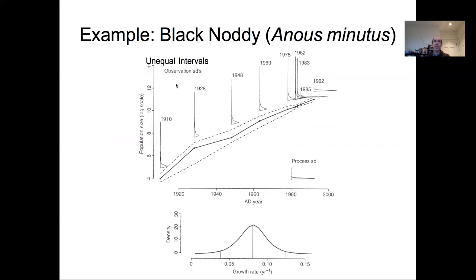Here's an example from the textbook looking at the population dynamics of a bird, the black noddy, where we're trying to estimate the process error and assigning unique observation errors at each time point, reflecting the different information with informative priors. We have unequal observation intervals, so we see large gaps where we're connecting the dots in these composite intervals.